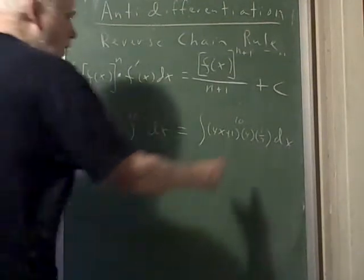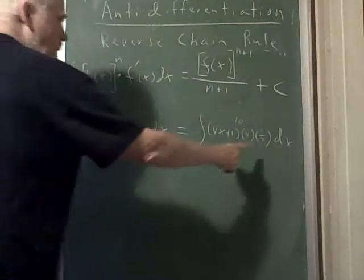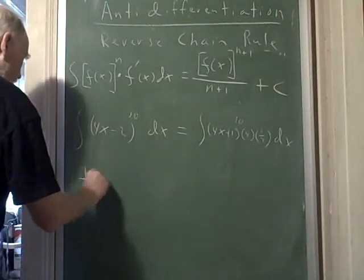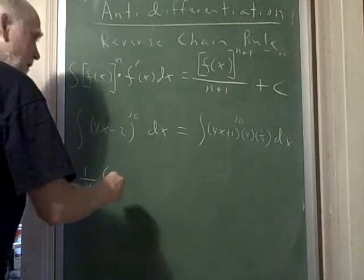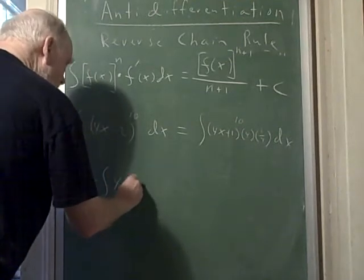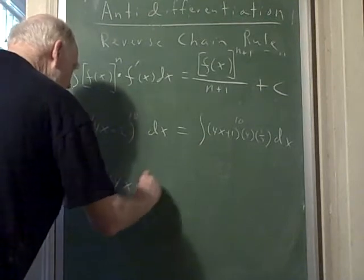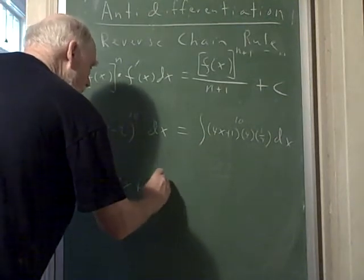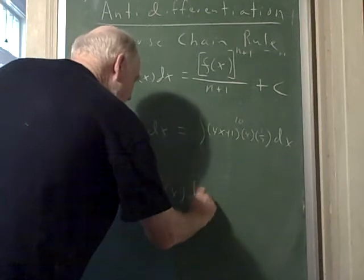I've almost got what I want. Now I can factor a constant out, and I'm only going to factor one of them: 1/4 times the anti-derivative of 4x plus 1 to the 10th power times 4 dx.